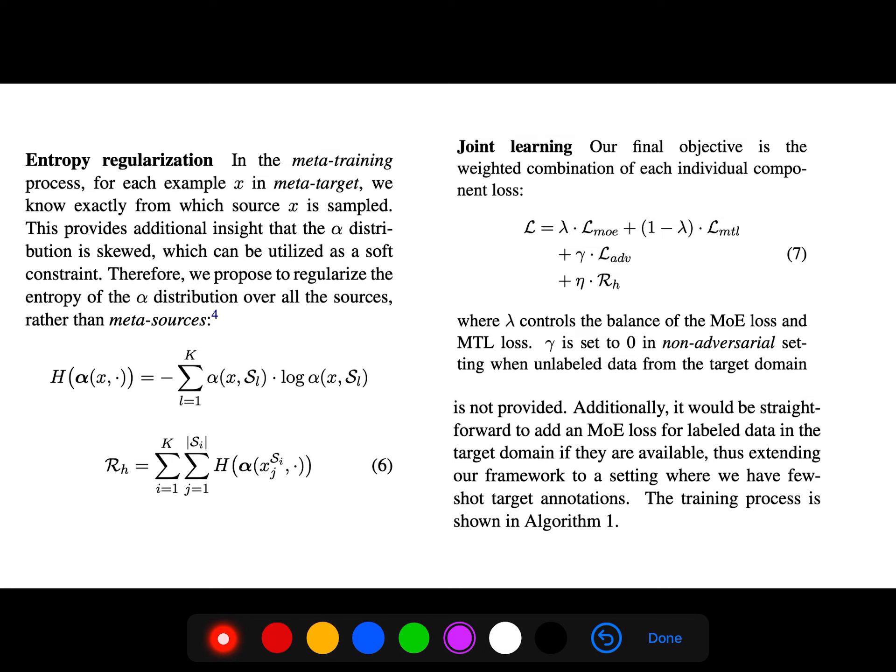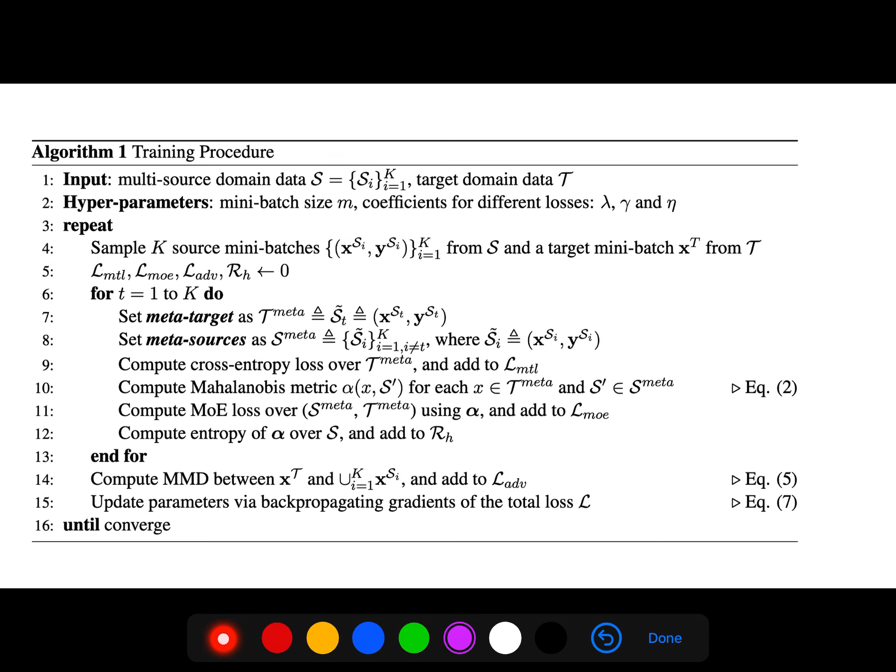And finally they add this entropy regularizer, mixture of expert, all of these losses that we talked about: the adversarial. And the λ controls the balance of, for example, how much this mixture of experts are important or other components of the loss. So we compute the MMD here, compute a mixture of expert here, entropy here, cross-entropy here.